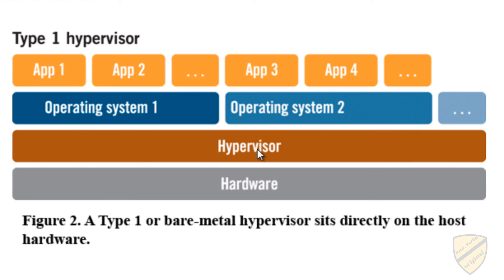Some examples of type 1 hypervisors include Xen, which is the open-source hypervisor that a good deal of virtualization is based on, as well as Microsoft Hyper-V and VMware ESXi — all of these are type 1 hypervisors.